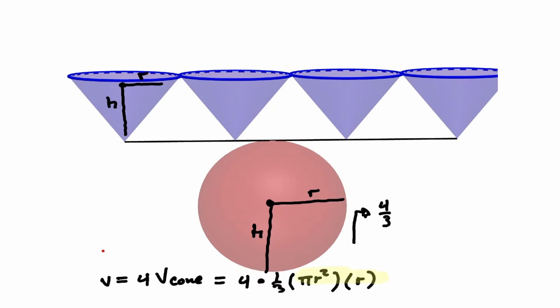Now this expression we can just write it as pi r to the third. So now we have a formula to find the volume of any sphere — that is going to be equivalent to four over three times pi times the radius to the third. Let's take a look at one example.